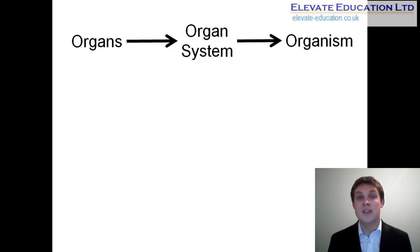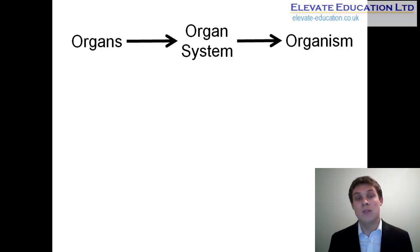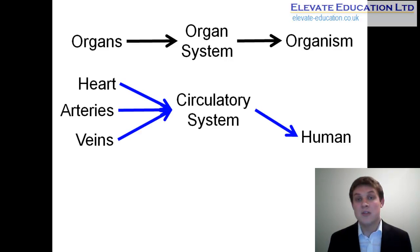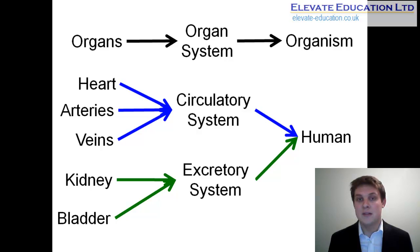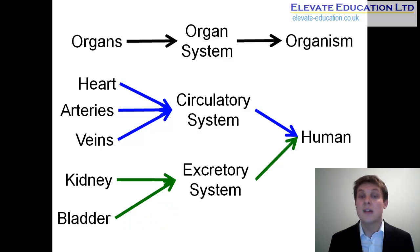Different organs working together to do the same job are referred to as an organ system. For example, the heart only works in conjunction with arteries, veins, and capillaries that carry blood around the body; together these make up our circulatory system. Our excretory system contains a number of organs including the kidney and bladder. At the top level is the organismal level, where organ systems work together to create an organism — in this case, a human. So the levels of organization are: cells, tissues, organs, organ systems, and the organism.